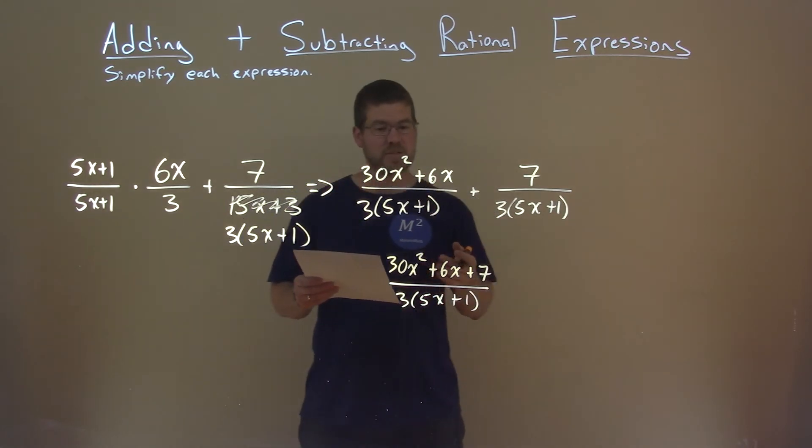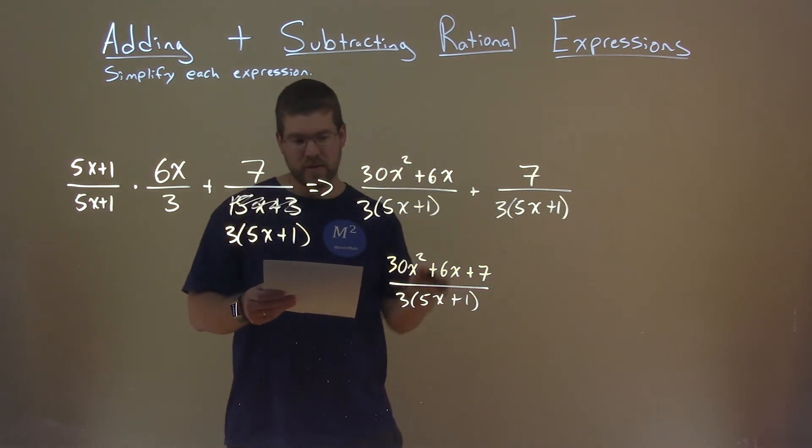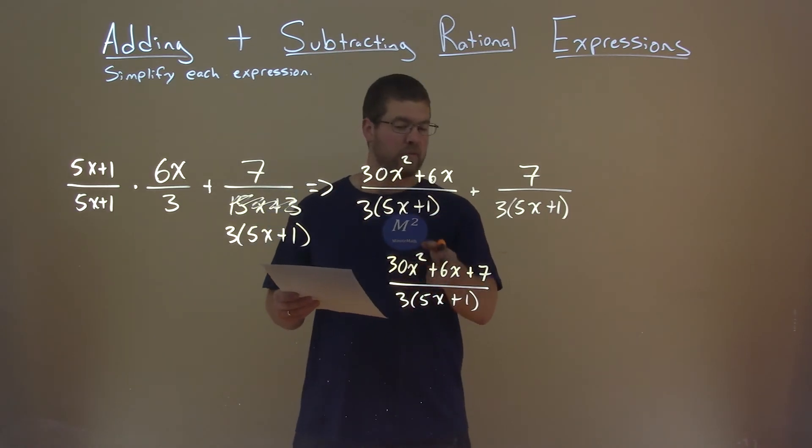And that's actually it. 30x squared plus 6x plus 7, divided by 3 times 5x plus 1, is our final answer.